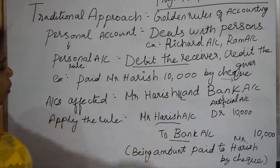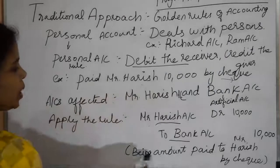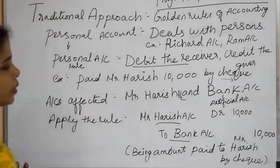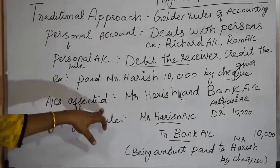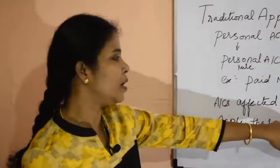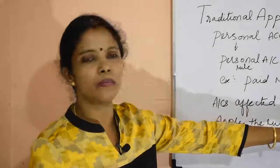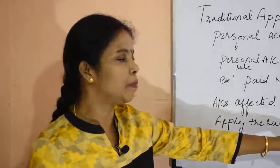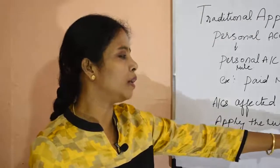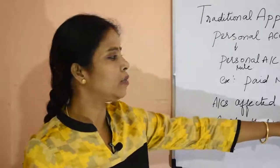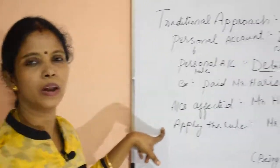We should not enter it as cheque; we should enter it as bank. So the entry will be: Mr. Harish account debit to bank. The narration will be written as: being amount paid to Harish by cheque. This rule is clearly understood — we are debiting the receiver and crediting the giver, which is the bank as the artificial person.